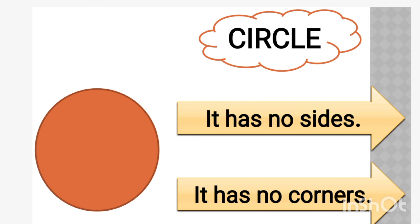Each and every shape has some qualities and some points. About circle, the first point is it has no sides. Circle has no sides — as you can see, there are no sides visible, only a curve. It has only curves, no sides, and it has no corners also.